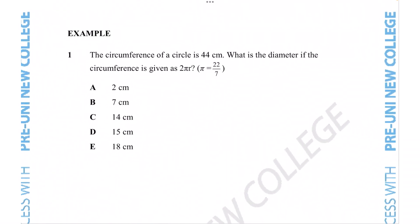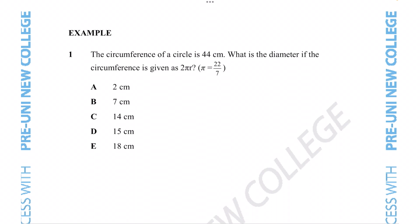That is about the introduction of all the things to do with diameter. Let's see if we can put that knowledge to practice in this example question. In this example question, we're told that the circumference of a circle is 44 centimeters. What is the diameter if the circumference is given as 2 pi r? See how the question has specifically told us that they want us to use this format of pi. If you use pi is equal to 3.14, you would actually get the wrong answer. You would not get any of these answer options. So always make sure you pay attention to what the question says and just don't memorize the value of pi.